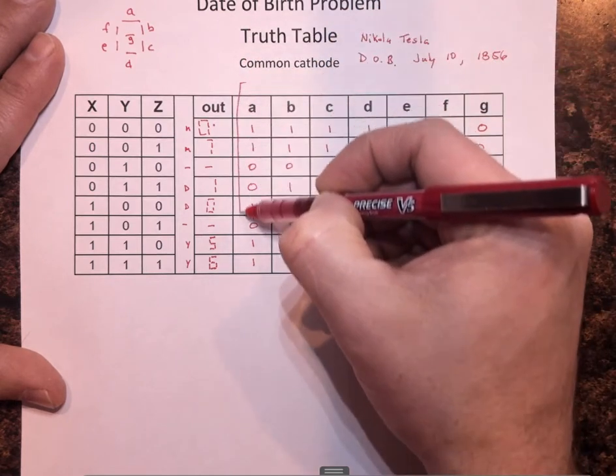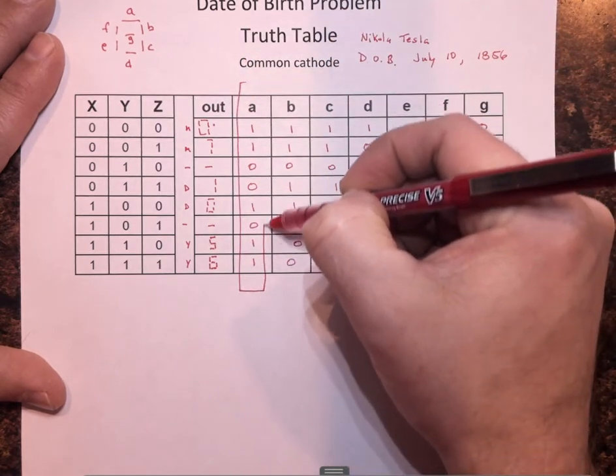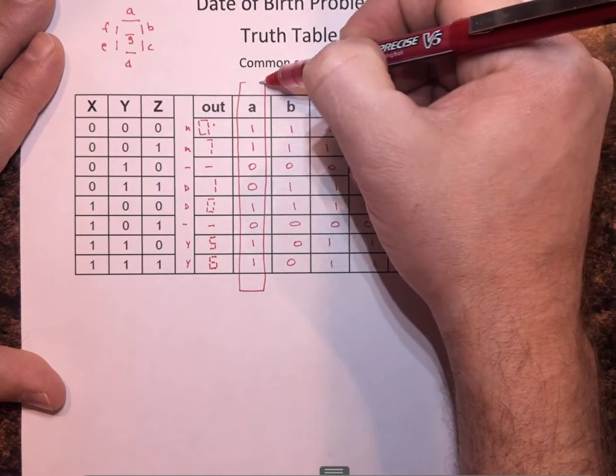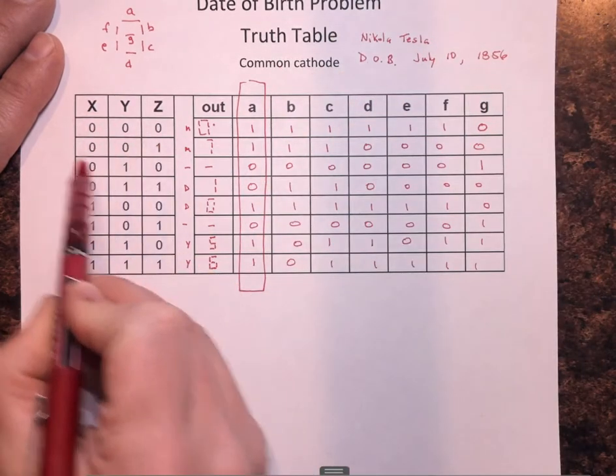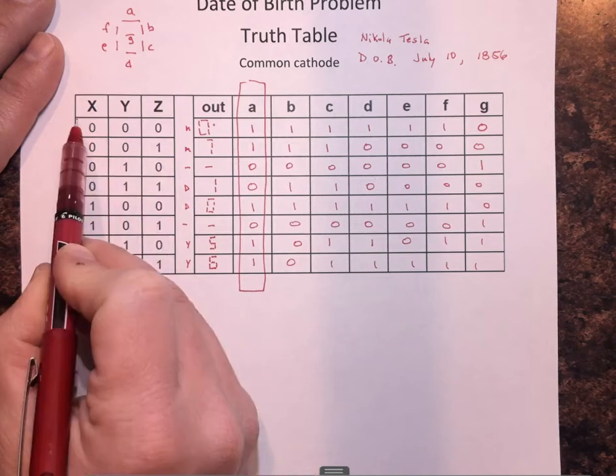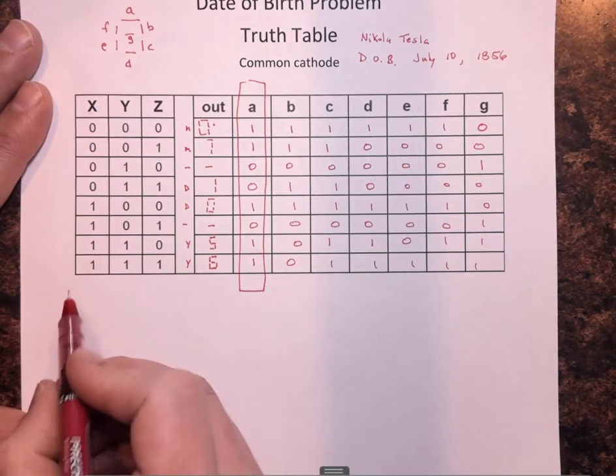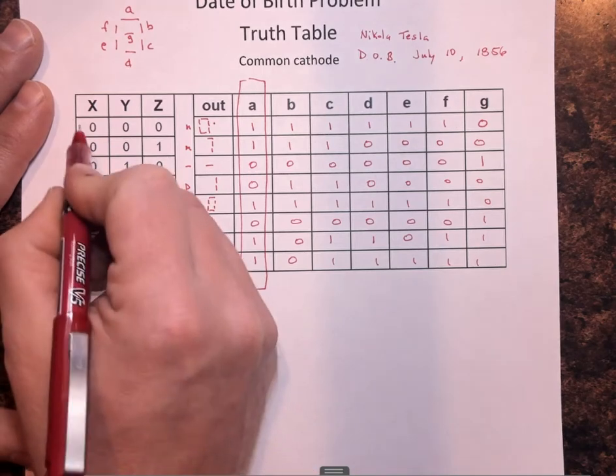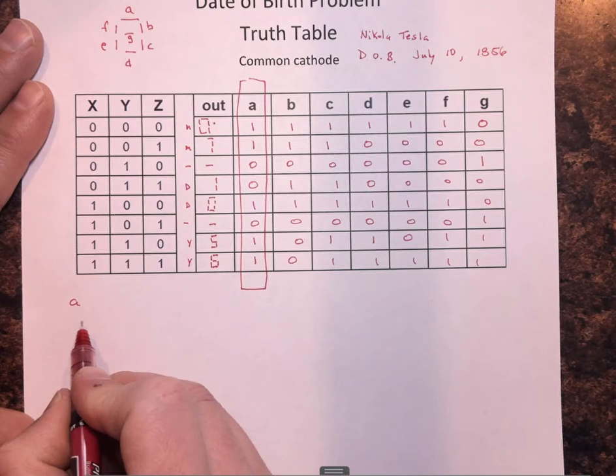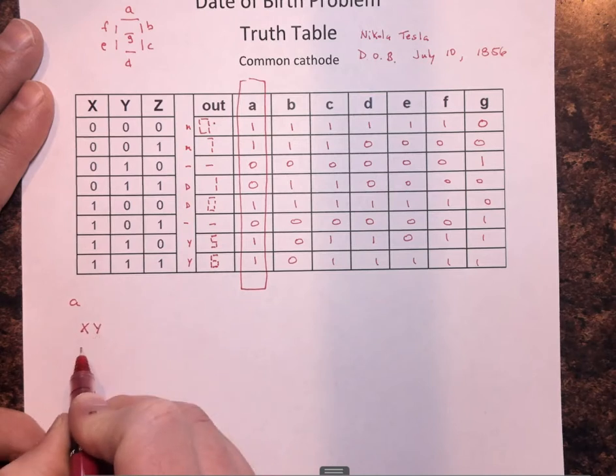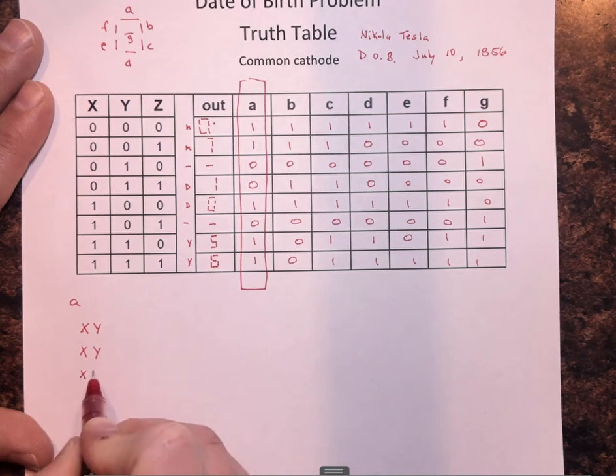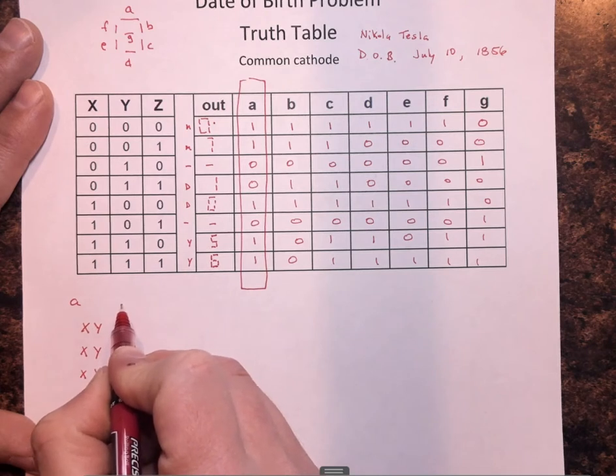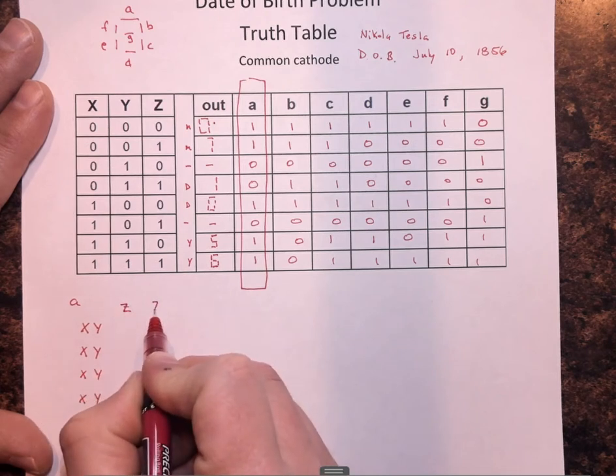Okay, so LED A simply has to know when it's on or off based on these input combinations of X, Y, and Z. So we're going to create a K-map for LED A. We're going to have, because we have three inputs, we're going to have the first two, X and Y, on rows. And we're going to have four rows.